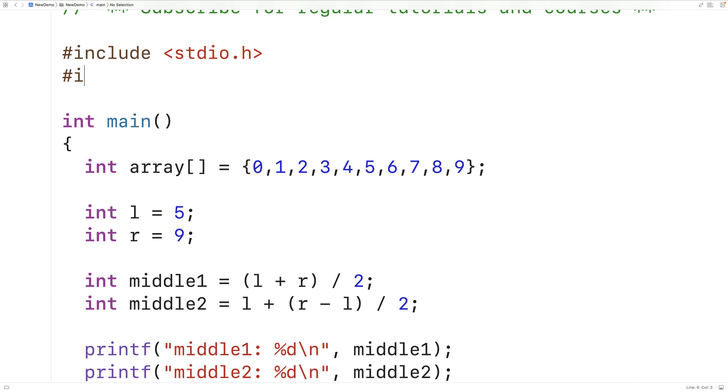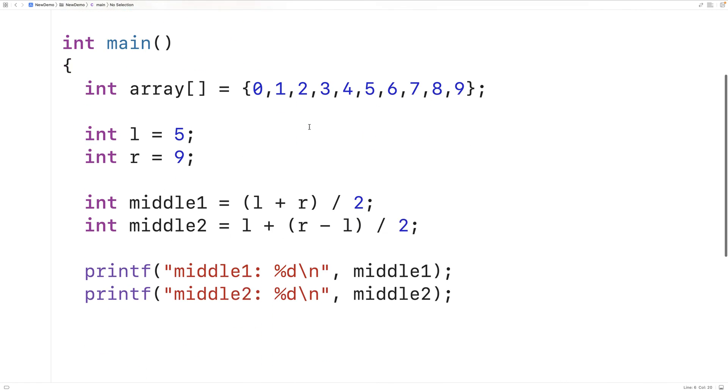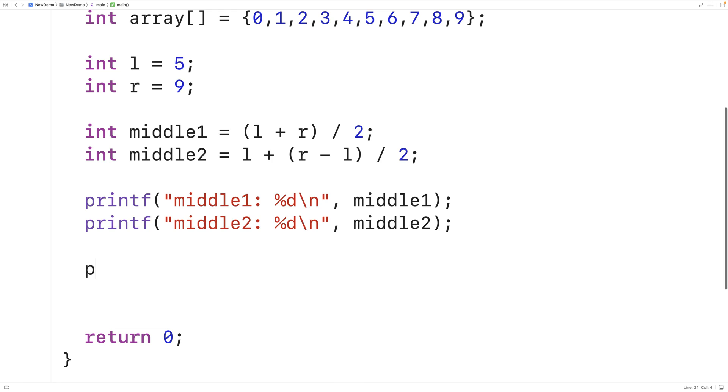So if we include limits.h, we can access the int underscore max constant. And we'll print out what int underscore max is. We'll have int underscore max colon percent D backslash N and we'll output int underscore max.